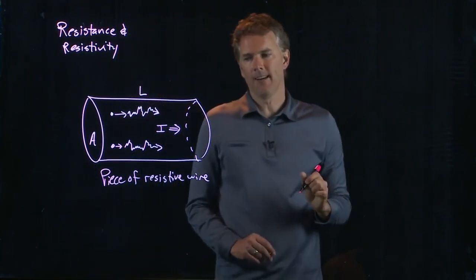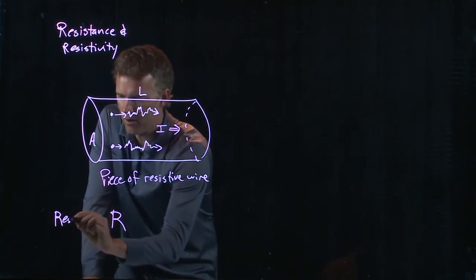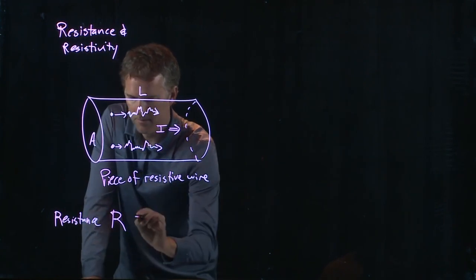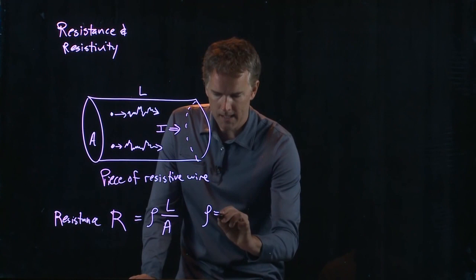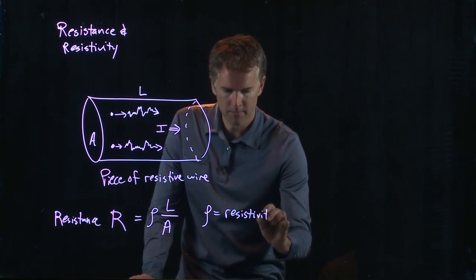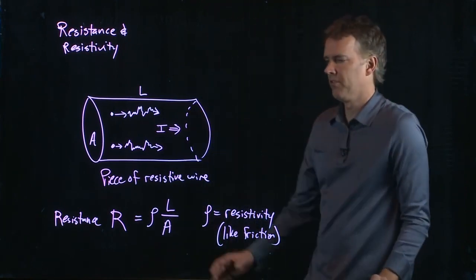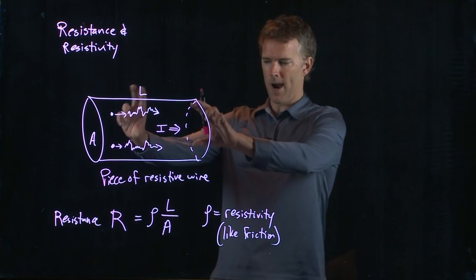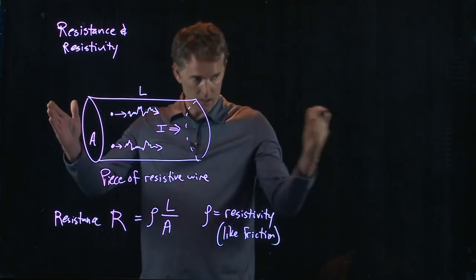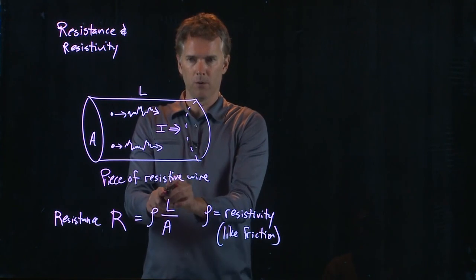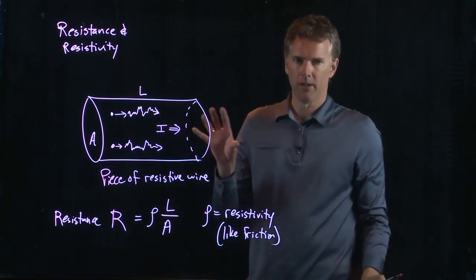So this is our piece of wire. How do we characterize the resistance of this wire? The way we do it is the following. Resistance R is rho times L over A, where rho is the resistivity. If you have a wire that is more resistive, then it has a bigger overall resistance. If it is longer, then there is a bigger overall resistance. But if it is thicker, if it has a bigger cross-sectional area A, then it is less resistive.